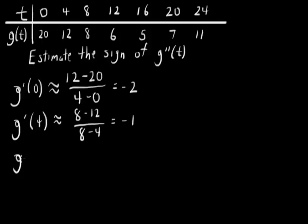One more time. Keep on writing approximately equals here, because we've got estimates, we're not getting really close to what's going on. 6 minus 8 over 12 minus 8. It's negative 0.5.